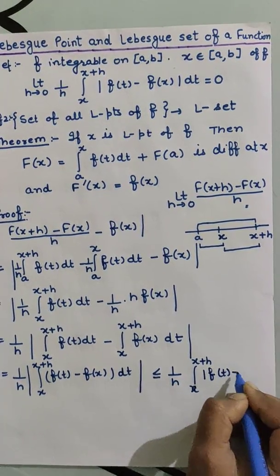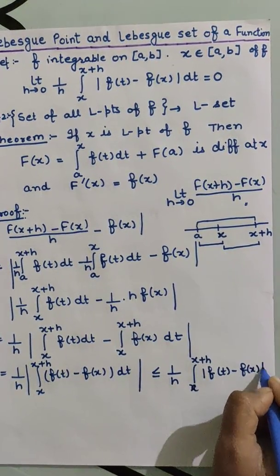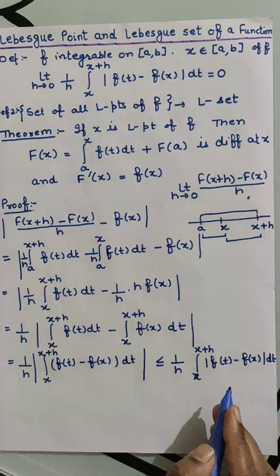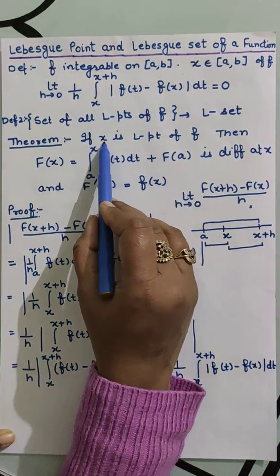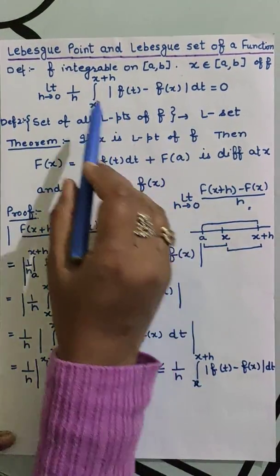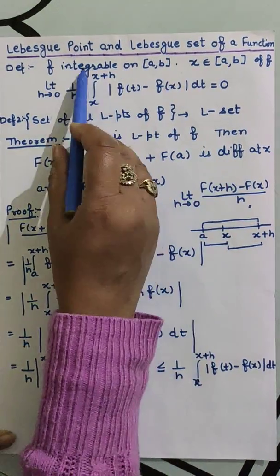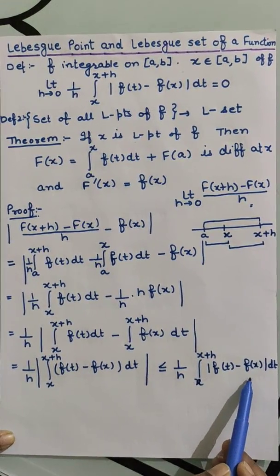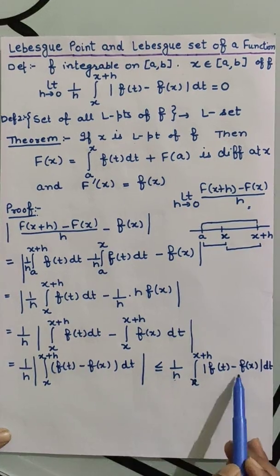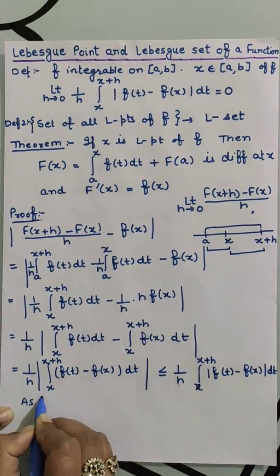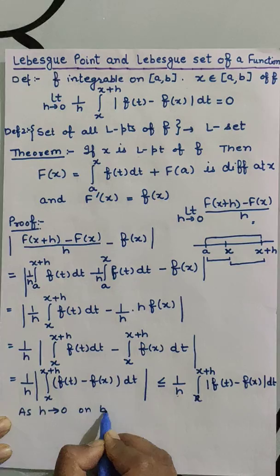And as we are given that x is a Lebesgue point of f, it means this limit is 0. So as h approaches to 0 on both sides,